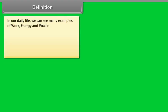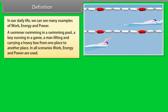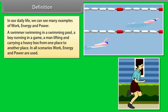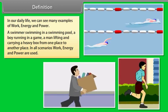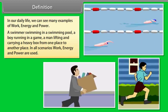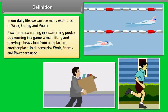Definition: In our daily life, we can see many examples of work, energy and power. A swimmer swimming in a swimming pool, a boy running in a game, a man lifting and carrying a heavy box from one place to another place. In all scenarios, work, energy and power are used.